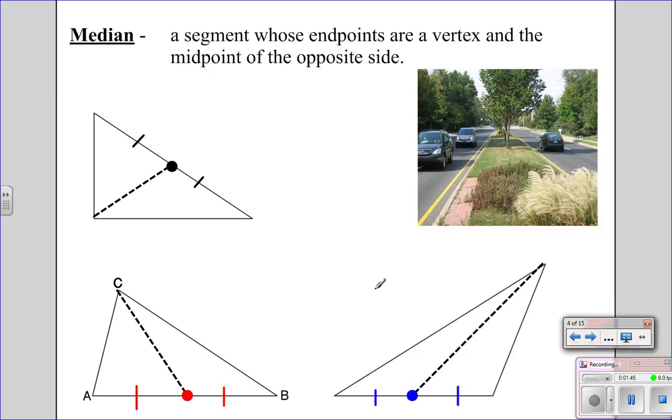The next one we're going to look at is the median of a triangle. The median is a segment whose endpoints are a vertex and the midpoint of the opposite side. So if you think of a median of a road, it cuts the road in half, so it's cutting the side in half. Both sides are going to be the same. So you start from the vertex, and you just draw a line to the midpoint of the opposite side. So you'll get two congruent pieces.